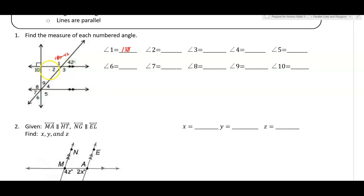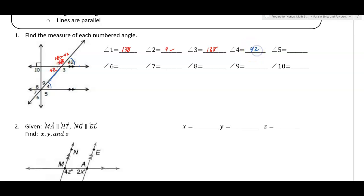Angle two — right away you should know those are vertical angles, so that's 42 degrees. Now that angle one is 138 degrees, angle three is also 138. Angle four touches the parallel lines and the transversal — those are corresponding angles, so angle four is 42 degrees.